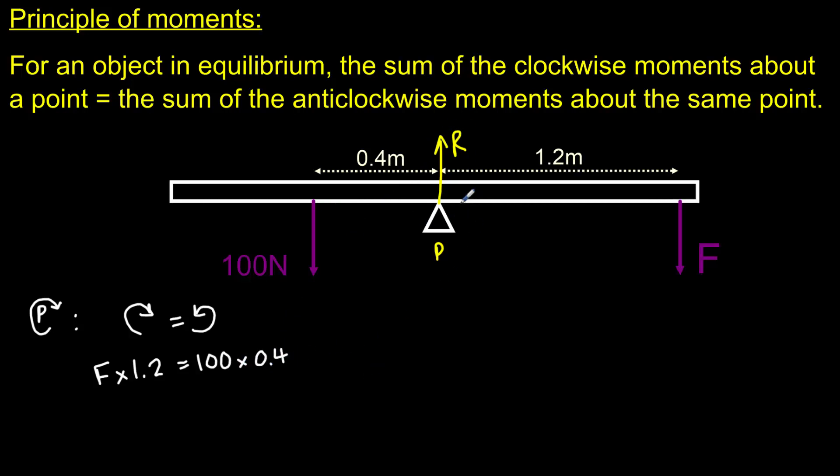So 100 multiplied by the perpendicular distance from the pivot of 0.4 metres. Remember, the force R, because it has no perpendicular distance from the point P, has no turning effect, and so we can neglect that from our calculations. So now let's rearrange our equation. So F is going to be equal to 40. That's 100 multiplied by 0.4. Divided by 1.2. That will give us a force of 33.3 Newtons.